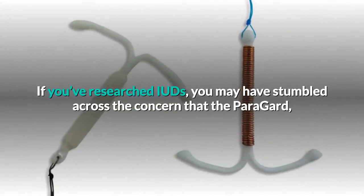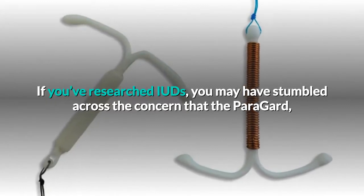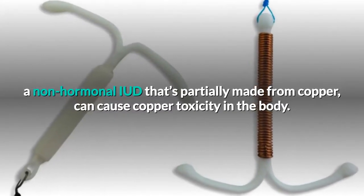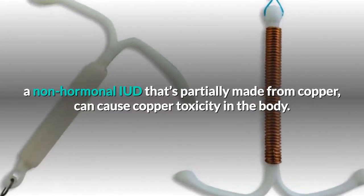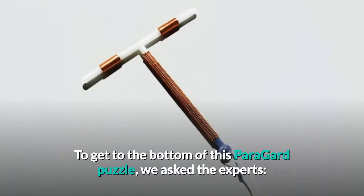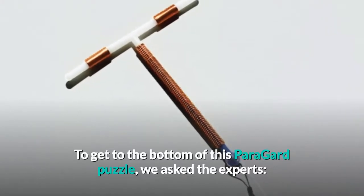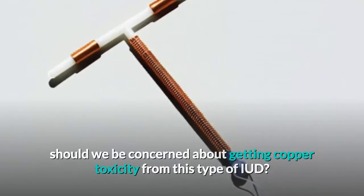If you've researched IUDs, you may have stumbled across the concern that the Paragard, a non-hormonal IUD that's partially made from copper, can cause copper toxicity in the body. To get to the bottom of this Paragard puzzle, we asked the experts: should we be concerned about getting copper toxicity from this type of IUD?